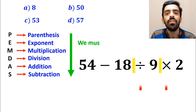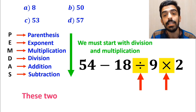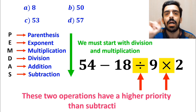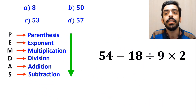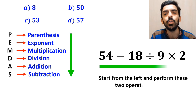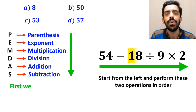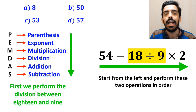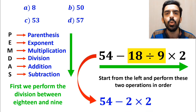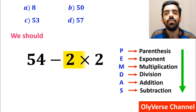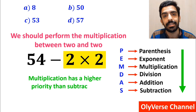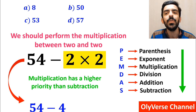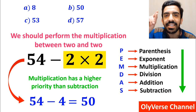According to the PEMDAS rule, we must start with division and multiplication, because these two operations have a higher priority than subtraction. However, it's very important to keep in mind that multiplication and division have exactly the same level of priority. In this situation, the best approach is to start from the left and perform these two operations in order. So first we perform the division between 18 and 9, and we can write 54 minus 2 times 2. In the final step, we perform the multiplication between 2 and 2, so this expression simplifies to 54 minus 4, and finally we get the answer 50.